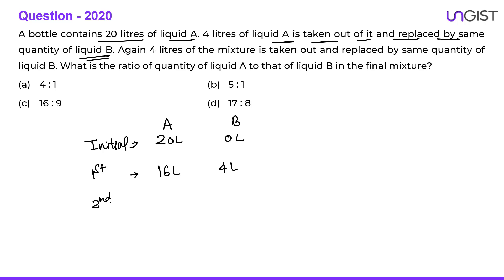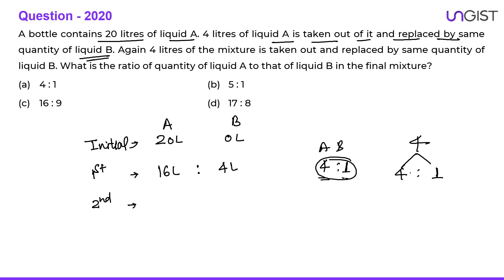In the second operation, the mixture is now in the ratio A to B = 4:1 (since 16:4 = 4:1). When 4 liters of this mixture is taken out, it comes out in the ratio 4:1. Dividing 4 liters in ratio 4:1 gives 3.2 liters of A and 0.8 liters of B removed. So A remaining is 12.8 liters and B remaining is 4 − 0.8 = 3.2 liters.